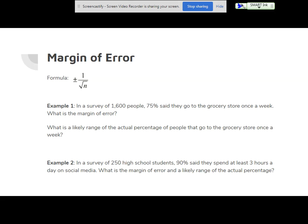So let's look at that right here. In a survey of 1,600 people, 75% said that they go to the grocery store once a week. What is the margin of error? It is simply plus or minus one over the square root of n. n is still the number in your sample of 1,600 people.